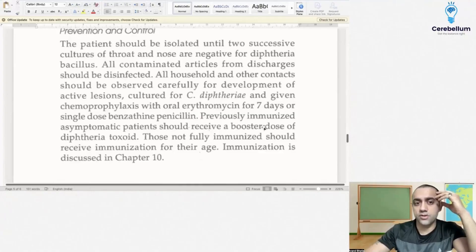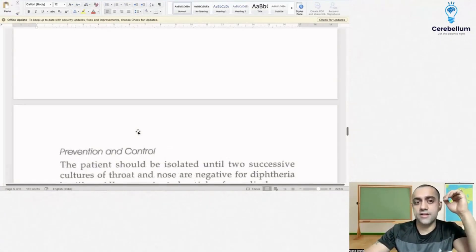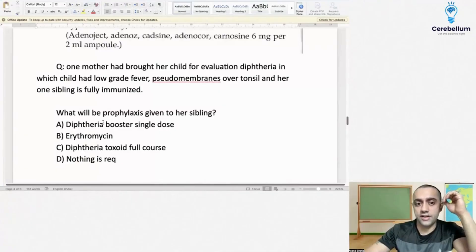So the best answer for this question will be diphtheria toxoid, because previously immunized asymptomatic patients. So this question, the best answer will be diphtheria toxoid single dose. This A would be the best answer for this question.